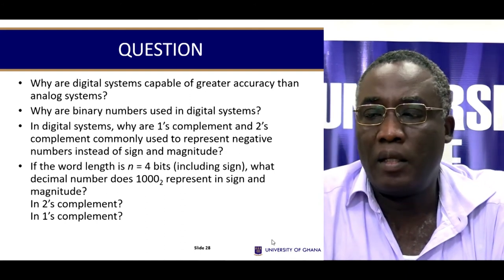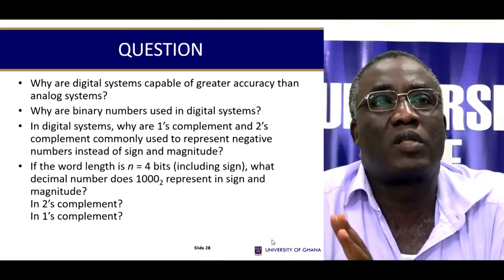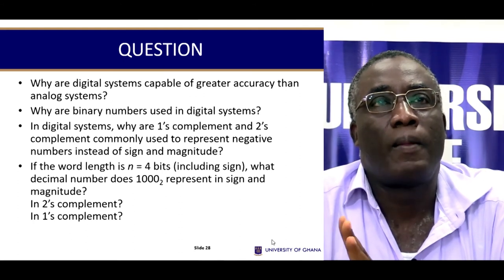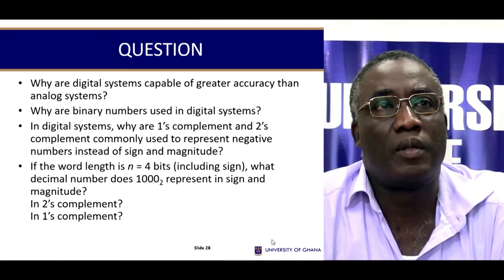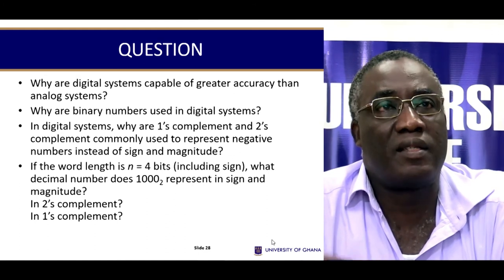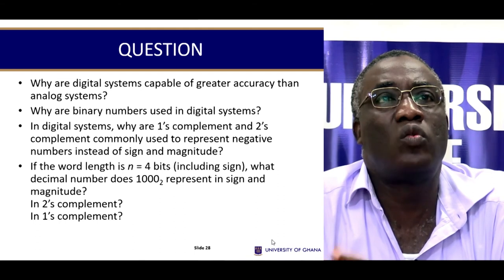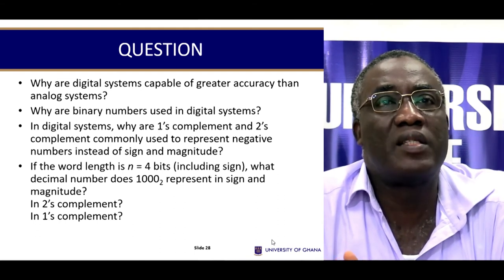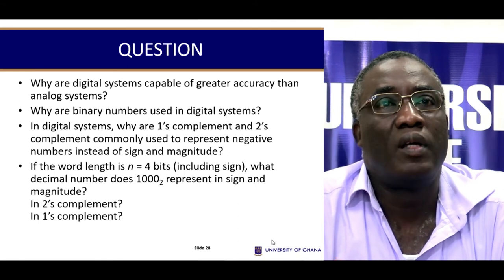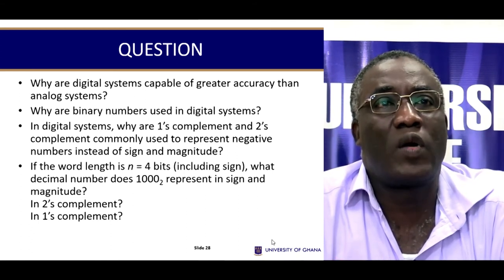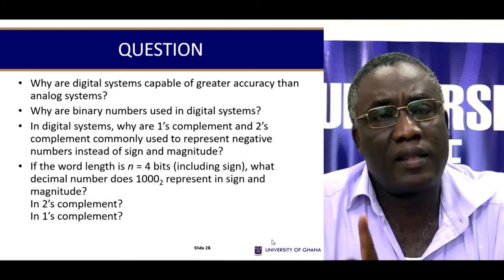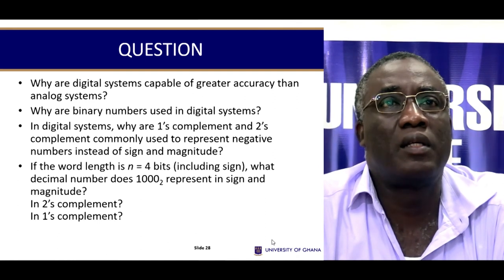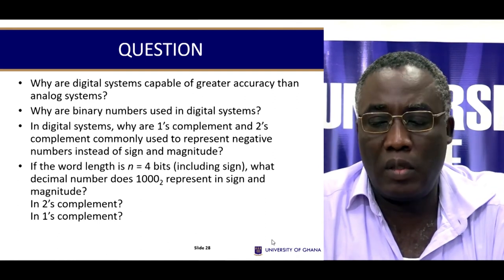Here are some things to consider: Why are digital systems capable of greater accuracy than analog systems? Why are binary numbers used in digital systems? Why are one's complement and two's complement commonly used to represent negative numbers instead of sign and magnitude? If the word length is 4 bits, what decimal number does 1000 represent in sign and magnitude, two's complement, and one's complement? Think about these. Thank you for listening or watching — we'll see you in the next session.